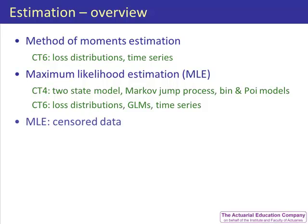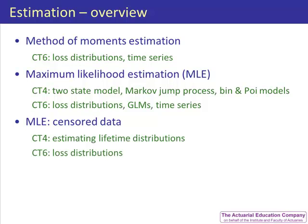The third unit, maximum likelihood of censored data, develops how we can use maximum likelihood estimation to estimate parameters when we do not have the exact values of all the data in our sample. We will use this in subject CT4 to estimate the lifetime distribution function where we have censored data, and again in subject CT6 to estimate parameters of loss distributions.